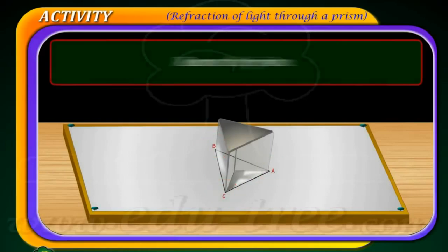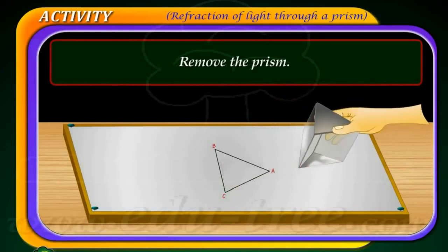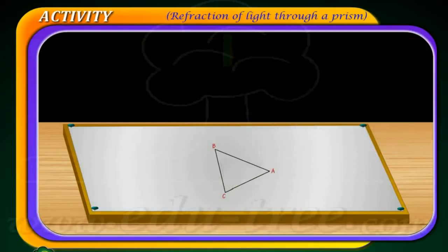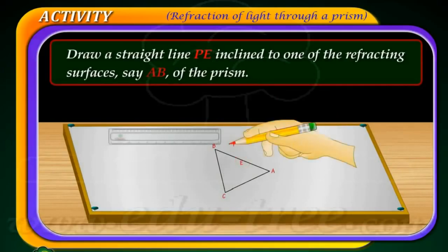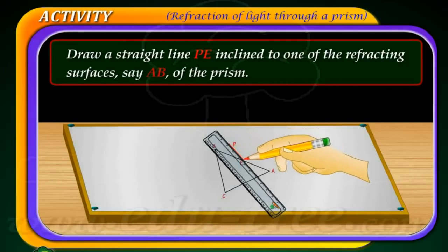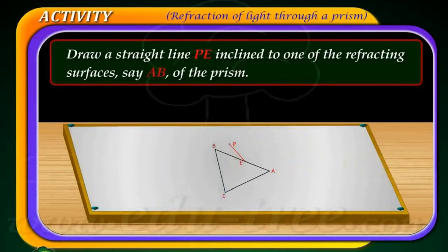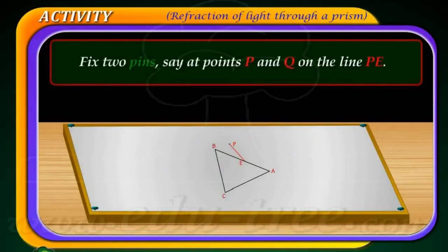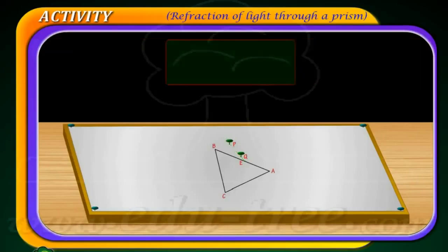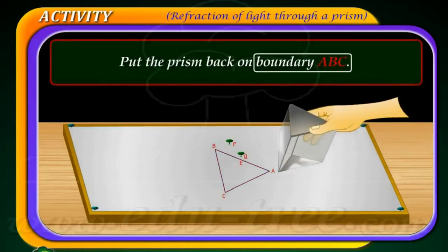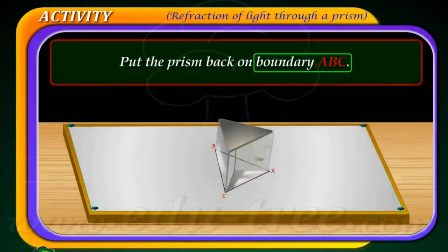Remove the prism. Next, draw a straight line PE inclined to one of the refracting surfaces, say AB, of the prism. Now fix two pins at points P and Q on the line PE. Then put the prism back on boundary ABC.